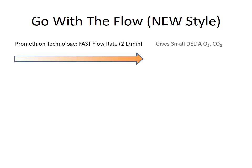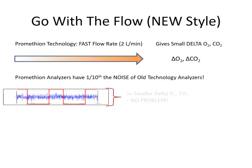Now let's look at how things happen with Prometheon. We use a very rapid flow rate. The result, of course, is that we have a small delta-O2 and delta-CO2. Now we can cope with that because our analyzers have roughly a tenth of the noise of the old technology analyzers used in the legacy systems. So the five times smaller delta is no problem.